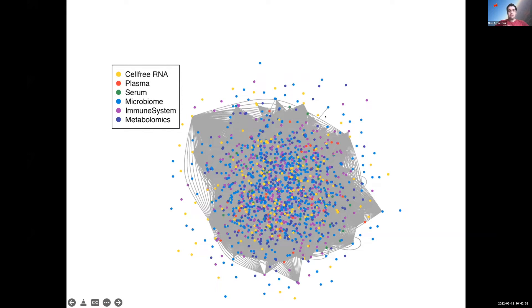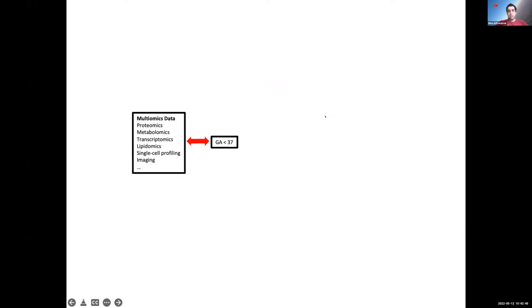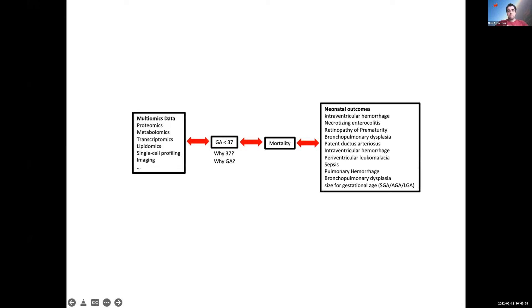In my day job we use various biological modalities and omics assays to understand pathways contributing to preterm birth, but despite significant investments we haven't moved the needle sufficiently at a global health scale. This led me to rethink our definition of preterm birth. We've been defining it as gestational age under 37 weeks — a concept from mortality rates in historic European studies several decades ago where there was a bend in the mortality curve around 37 weeks.